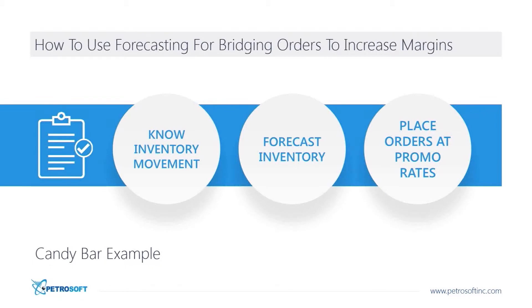As an example of a bridging order, imagine your vendor is offering a seasonal promotion on candy bars. The manager can place an order at the beginning of the promotional period and at the end of the promotional period. The first order covers the promotional period, while the one placed at the end covers the period in between the next promotional period. The store owner can then figure out how much more to order to bridge them between these promotional periods by using the forecasting tools offered by their back office system.